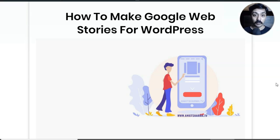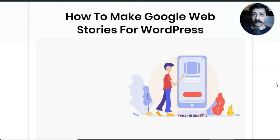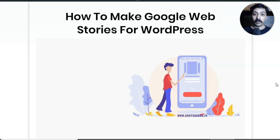Google is pushing really hard on these, and recently they have launched a plugin which you can use to create Google Web Stories right in your WordPress website. We know how powerful these stories are as far as content marketing is concerned, so Google thought — why not use that same concept and implement it on Google search results? So they launched AMP stories, which are now known as Google Web Stories, and the new thing is they have recently launched a WordPress plugin.